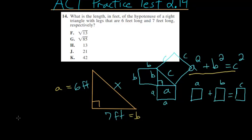So we have, according to the formula, a squared, or 6 squared, plus b squared, or 7 squared, is equal to the hypotenuse squared, which is x squared.